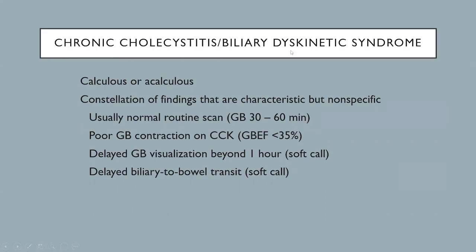Chronic cholecystitis or biliary dyskinetic syndrome can be either calculous or acalculous. There is a constellation of findings characteristic to chronic cholecystitis or biliary dyskinetic syndrome, but not specific. Usually with the initial 60 minutes of dynamic imaging, you see radiotracer accumulation in the gallbladder, tracer in the liver progressing into the biliary ducts and excreting into the small bowel. But when you perform the GBEF study with CCK or cholecystokinin, you get poor gallbladder ejection fraction with a GBEF of less than 35%.